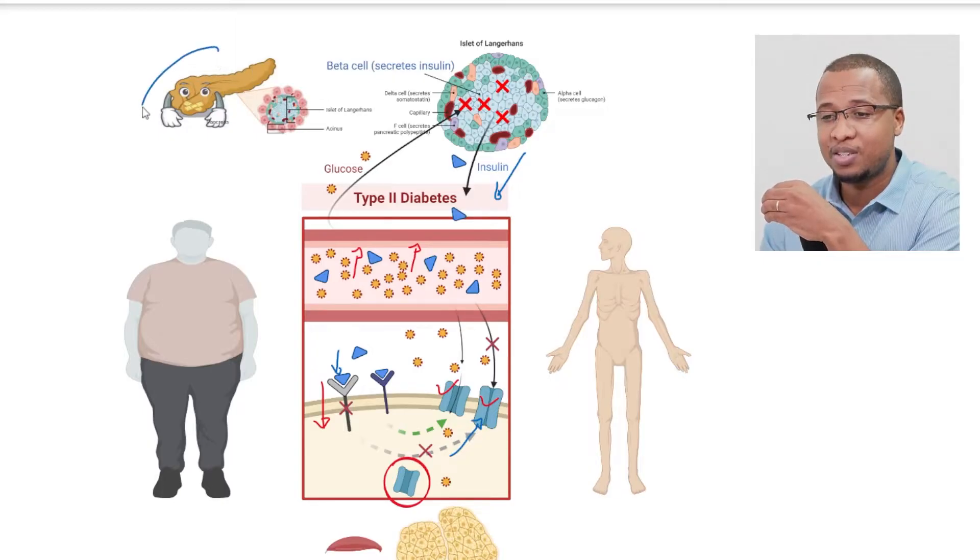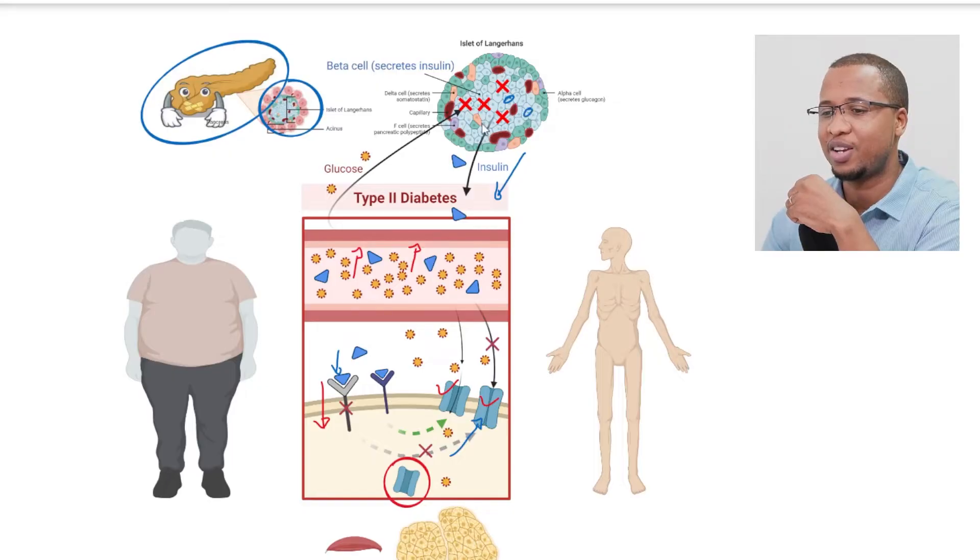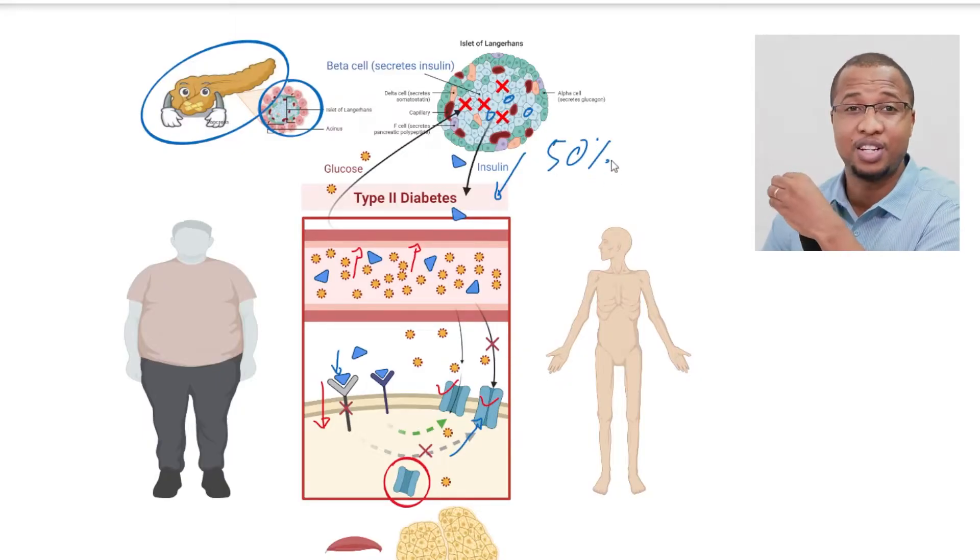They are dependent on your pancreas. Inside your pancreas, there are some cluster of cells called islets. Now, these islets, they have different types of cells, including the beta cells that release insulin. Now, as I told you last time, at the time of diagnosis of type 2 diabetes, most people, half of their beta cell function is gone.